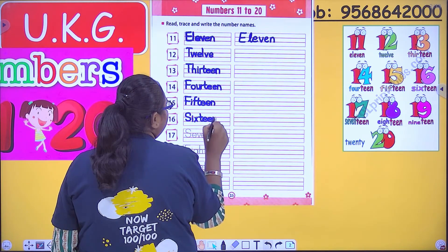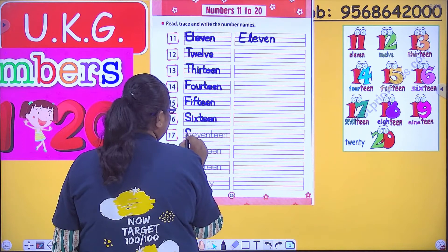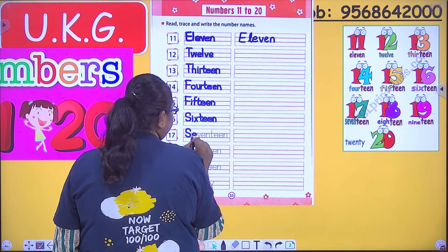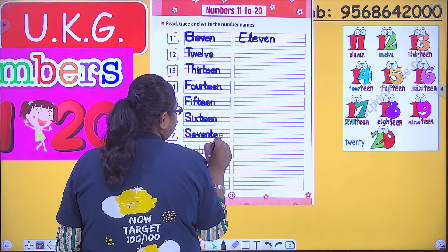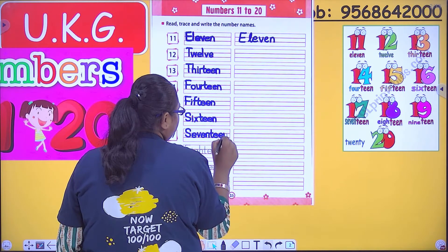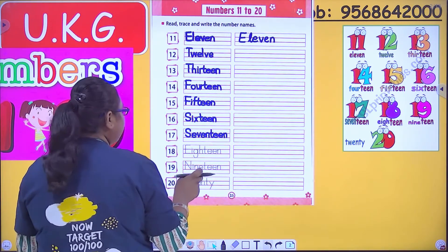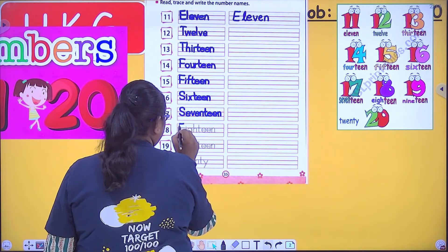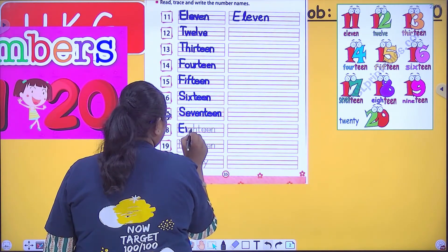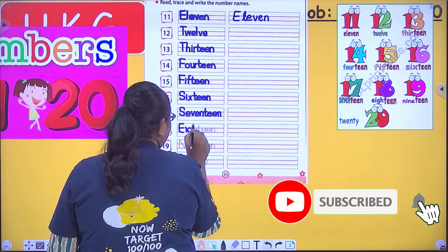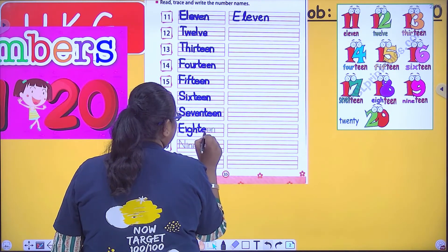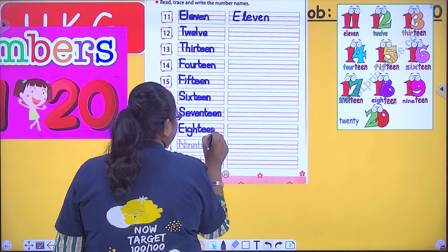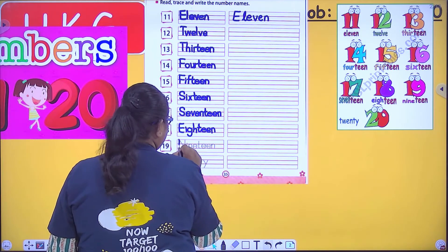Then comes 17: S-E-V-E-N-T-E-E-N. 17. Next comes 18: E-I-G-H-T-E-E-N. 18. Then comes 19: N-I-N-E-T-E-E-N. 19.